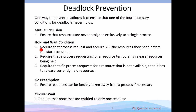For deadlock prevention, we prevent deadlock by making sure one of those four conditions doesn't hold — mutual exclusion, hold and wait, no preemption, etc. For mutual exclusion: ensure that resources are never assigned exclusively to one single process — remove the mutual exclusion condition. For hold and wait: a process is holding a resource, not releasing it, and asking for more. What you can do is make sure that processes request all the resources they need before they start.